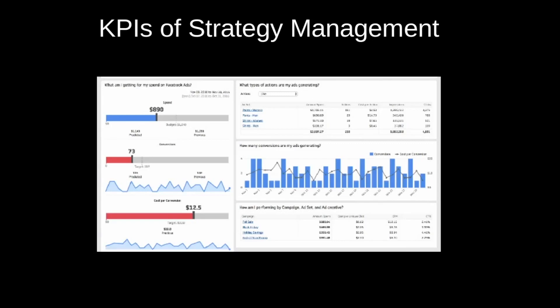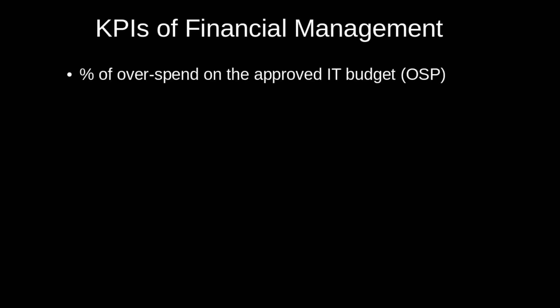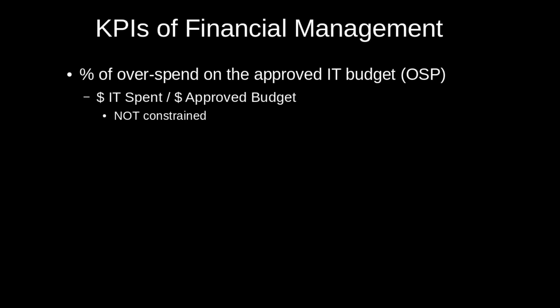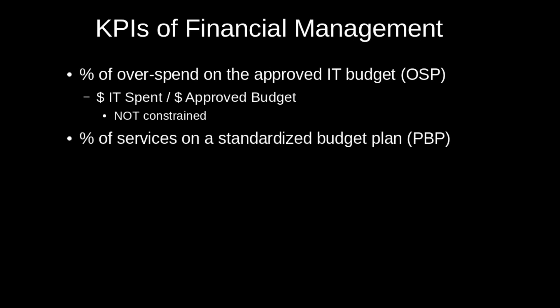When measuring KPIs, you'll most likely see them in the form of a dashboard. This is an example of a dashboard for measuring different KPIs in one place, with some financial and trending data. For the financial management aspect, we look at the percentage of overspending on the IT budget for all IT services total. I call this the OSP — it's the money spent on IT divided by the approved budget. This is not a constrained ratio.